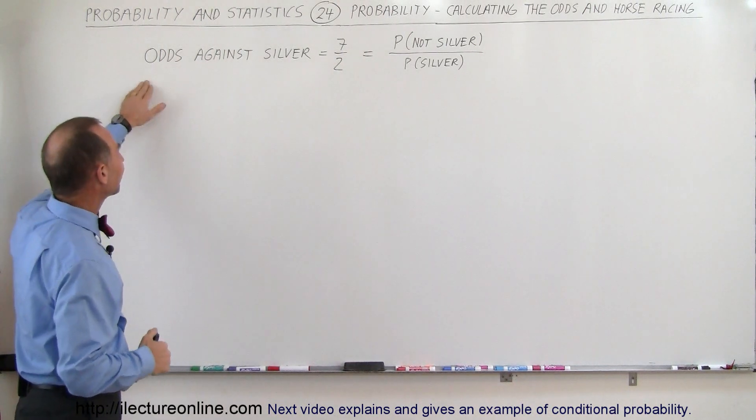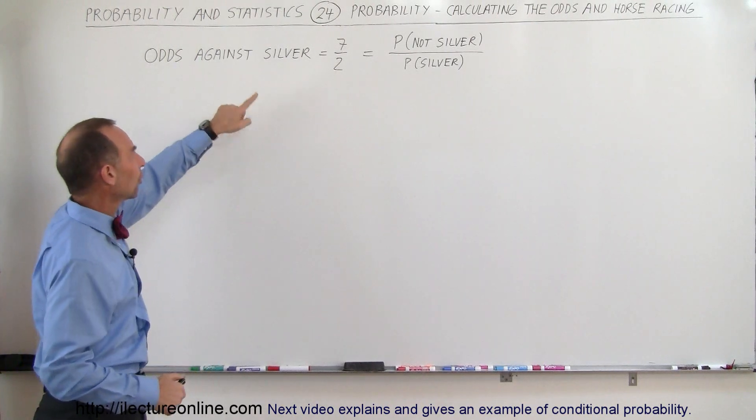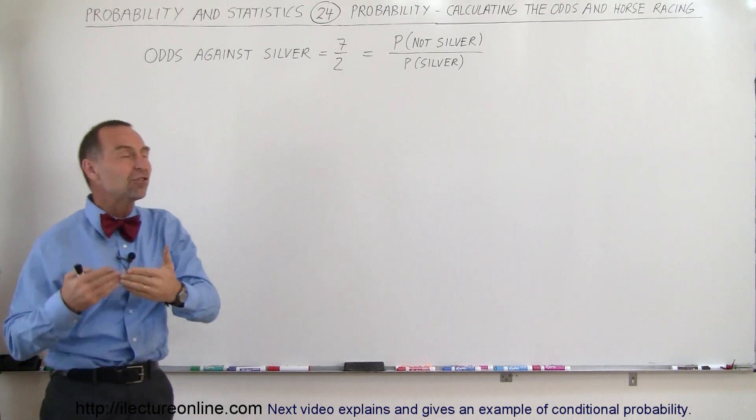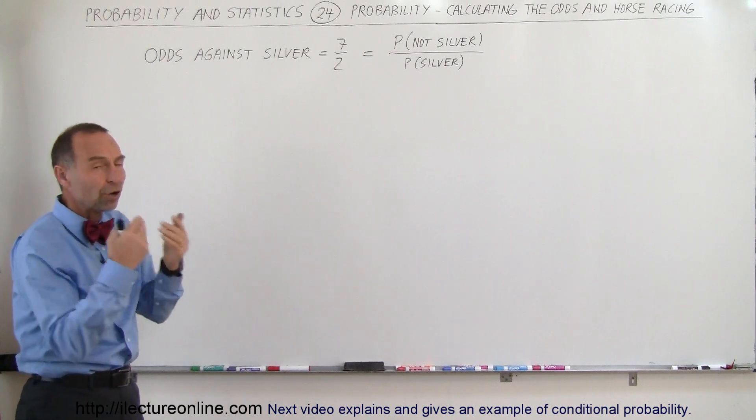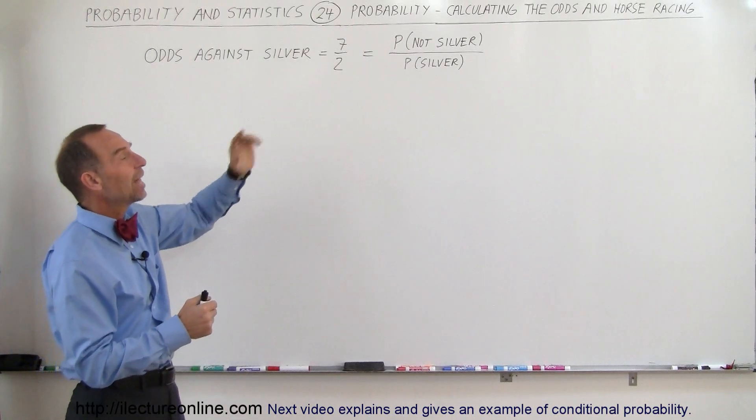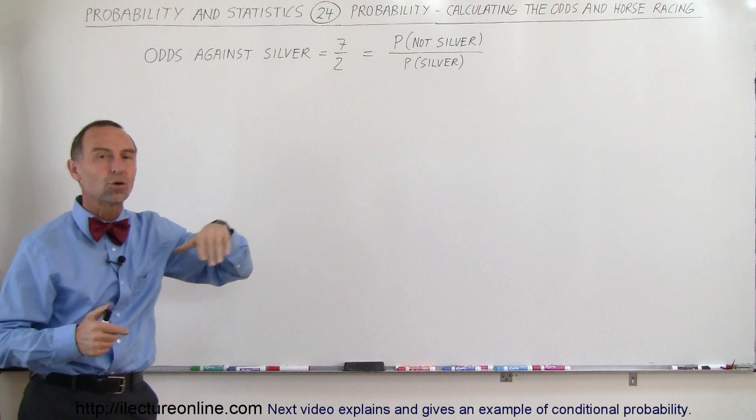And in this case let's say we have a horse Silver and the odds against Silver are 7 to 2, which means it's the ratio of the probability of the horse not winning divided by the horse winning.